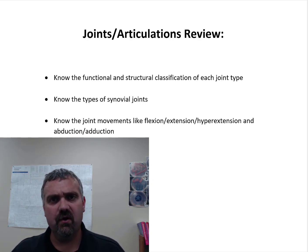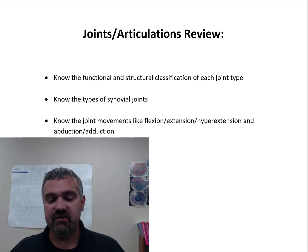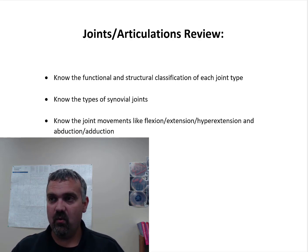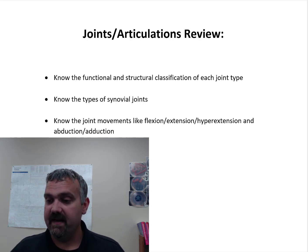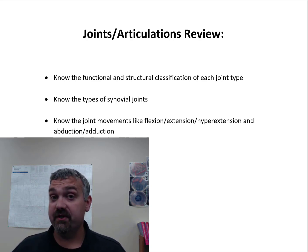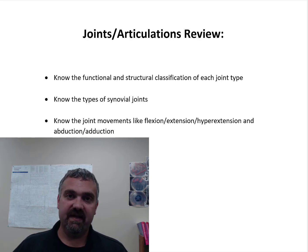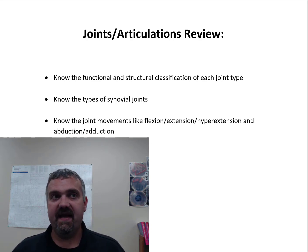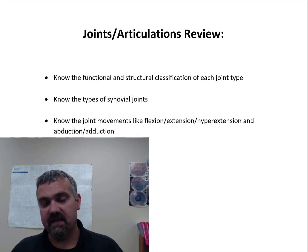The big thing to remember is that every joint is a compromise between mobility and stability. A synarthrosis — like the sutures of your skull or the gomphosis joints holding your teeth — has almost no movement but is very stable. On the flip side, the shoulder and hip sacrifice stability to be mobile. The shoulder is more mobile than the hip, but that makes it even less stable, which is why dislocating your shoulder is so much easier than dislocating your hip. The more mobile a joint is, the less stable it is, and vice versa.